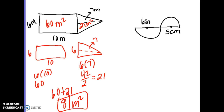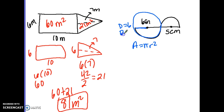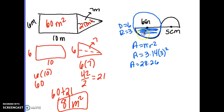For number four, I have two semicircles with different diameters, so I find the area of both and add them. Starting with the 6-centimeter diameter: area equals pi r squared. The radius is half of 6, which is 3. So I solve 3.14 times 3 squared, which gives 28.26. But I only have half the circle, so I divide by 2 and get 14.13, which rounds to 14.1.